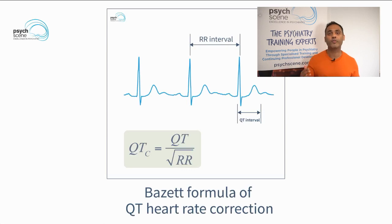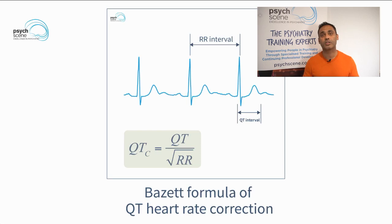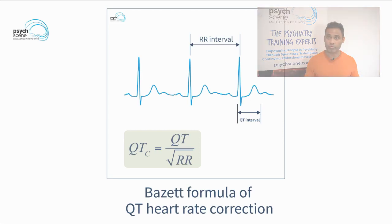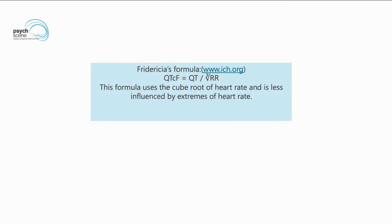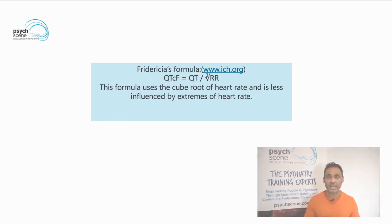The issue with the Bazett formula is that it overestimates the QTc interval at higher heart rates, such as greater than 60 beats per minute, and it underestimates the QTc interval at heart rates less than 60 beats per minute — so when you have bradycardia. As a result, the recommended formula is the Fridericia formula, which uses the cube root of the RR interval: QT divided by the cube root of RR. This formula is less influenced by the extremes of heart rates, so certainly something to think about when you have a prolonged QTc identified and are considering whether it is clinically significant.